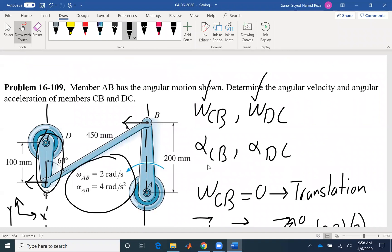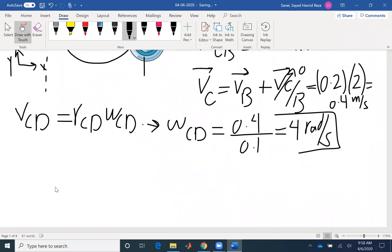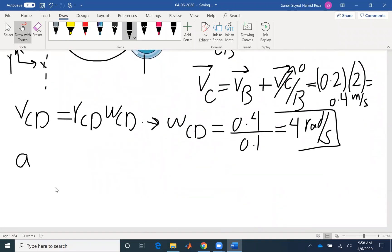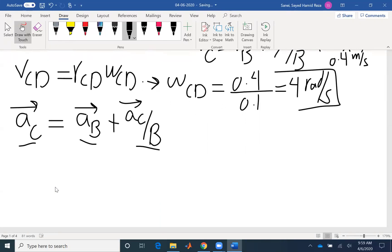Now we need to find the angular acceleration. To find the angular acceleration we need to write relative acceleration equation. Looking at the unknowns, alpha CB and alpha DC, the point of interest would be C because C is shared between the two links. So I'm going to write relative acceleration equation AC with respect to AB plus AC with respect to B. You need to remember that for acceleration we have two components, tangential and normal component. For each of these points I'm going to have two components unless one of them is zero.